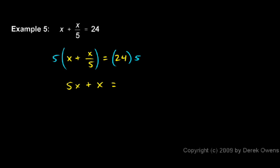24 times 5, and that's 120. So on the left, 5x plus x is 6x. 6x is 120.